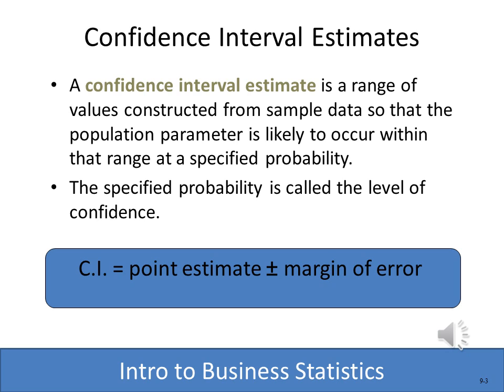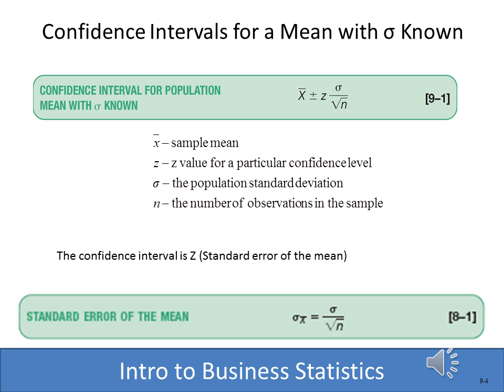A confidence interval estimate is a range of values constructed from the sample data so that the population value will likely occur within a specific level of confidence. So if we end up with a mean of 21.2, we'd like to know the range within which 95% of the population values will actually fall. The formula is very simple: x-bar, your sample mean, plus or minus z times the standard error. The standard error of the mean is the standard deviation of the population divided by the square root of n.